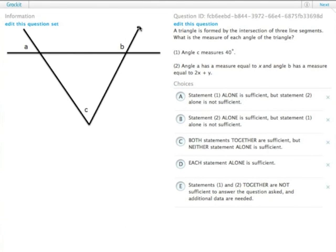We have a triangle formed by these three intersecting line segments. What's the measure of each angle of the triangle? We need all three angles, but they aren't all internal to the triangle, which makes things complicated.